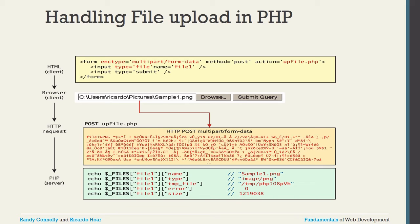When you write input type equal to file, a text box with a Browse button appears — no need to create a separate button. After browsing, the full file path appears in the text box. Based on the name attribute — for example, file1 — you can access $_FILES['file1'], which contains the parameters: name, type, tmp_name, error, and size.